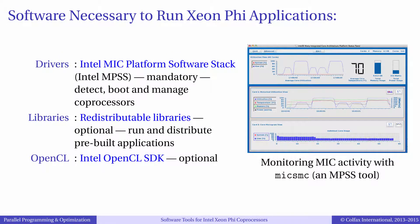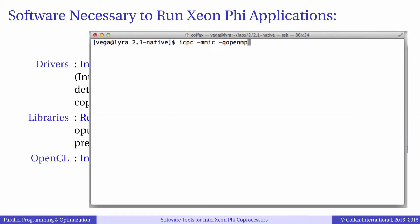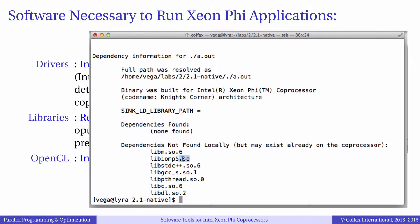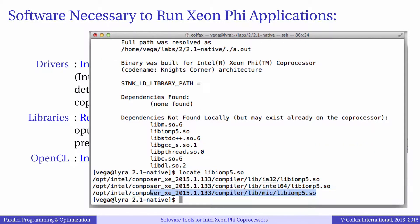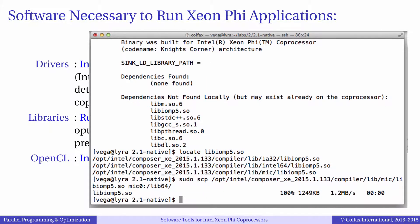Besides MPSS, in order to run an executable program you need to have its dependent libraries. Those libraries must be compiled for the MIC architecture. Oftentimes, applications for co-processors use Intel libraries such as the Offload library or the Intel OpenMP library. If you have the Intel Parallel Studio suite installed, then those libraries are already present on your system. However, users who want to only run pre-compiled applications for Phi but do not want to develop applications do not need to install Parallel Studio — they can use redistributable libraries which can be downloaded from the Intel website for free.